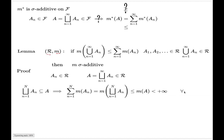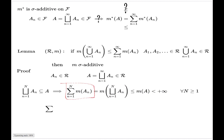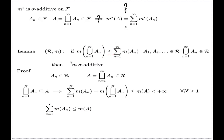So we have partial sums uniformly bounded by m(A), which ensures the series converges, and moreover the complete sum of the series is also less than or equal to m(A). This is the opposite inequality to the semi-additivity inequality, and therefore we have equality — the measure is σ-additive. That finishes the proof of the lemma, and also finishes the proof that the outer measure is σ-additive on the σ-algebra F.